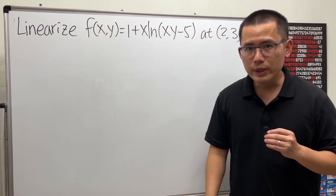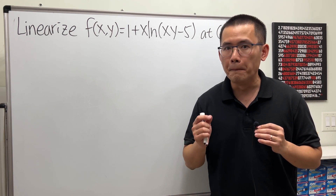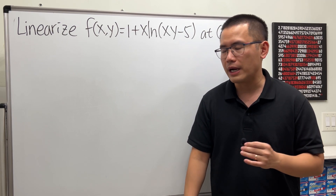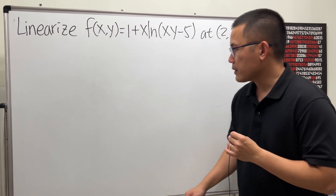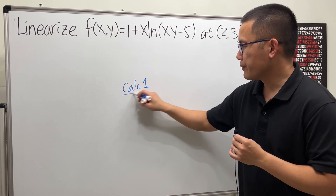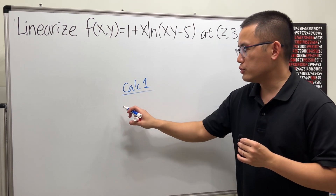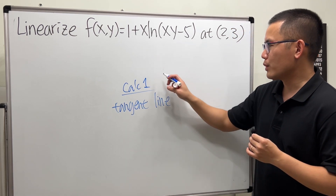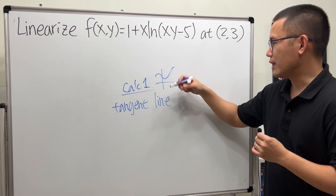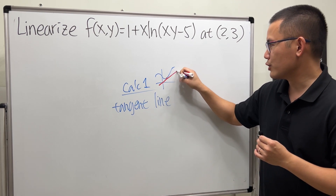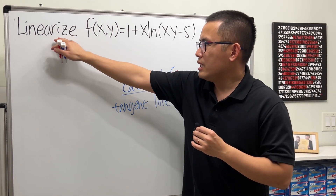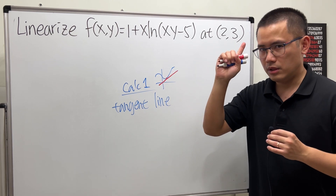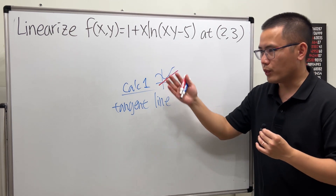To linearize this function, all we have to do is find the equation of the tangent plane, which is very similar to back in Calc 1 where we have the equation of the tangent line. You will see that linearizing this thing, we are going to get a plane — linear means x and y to the first power, but in the 3D world, that will be a plane.